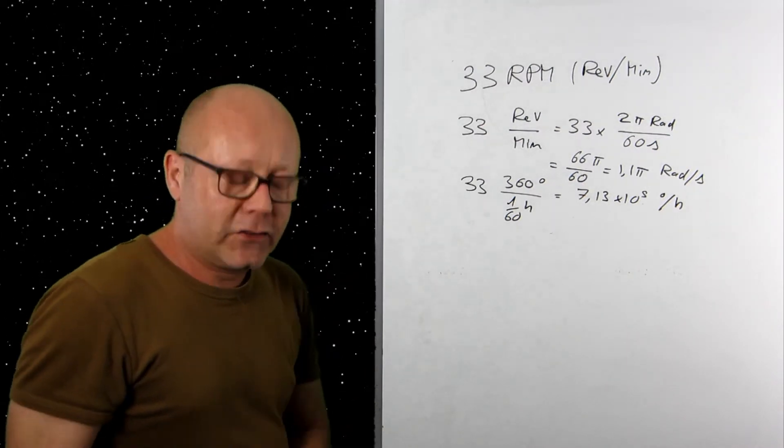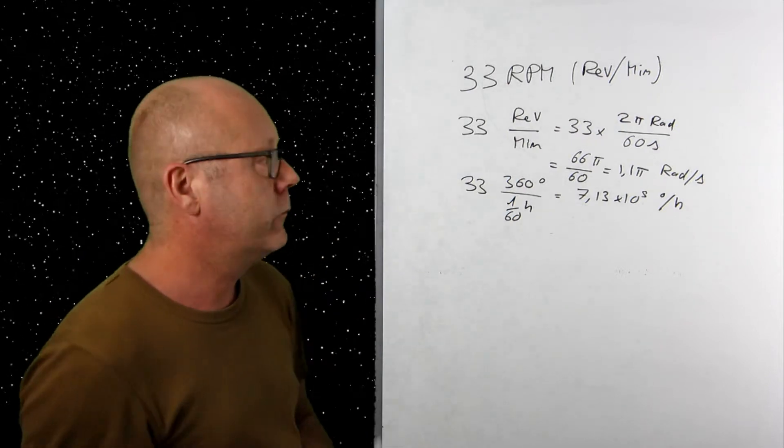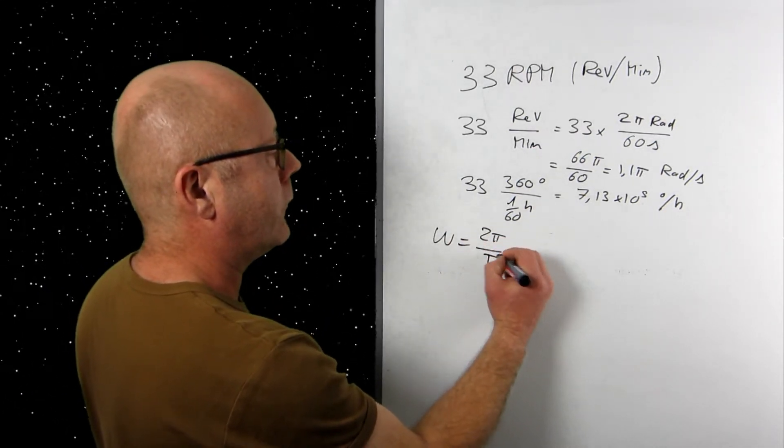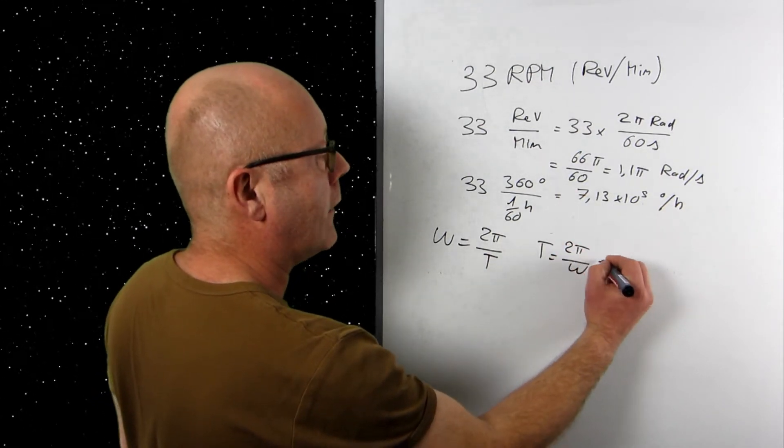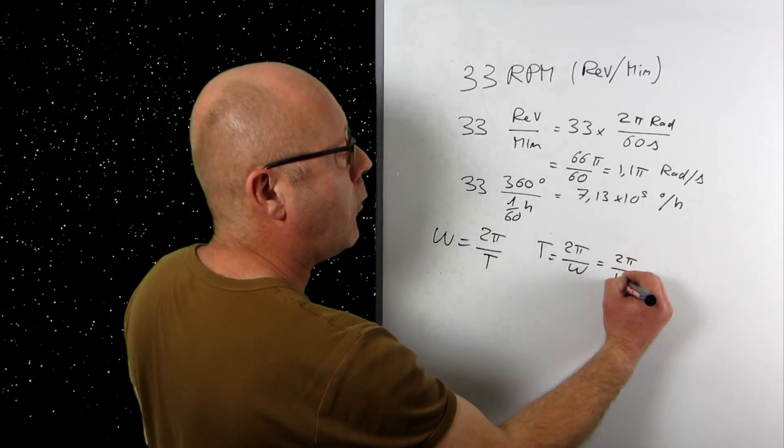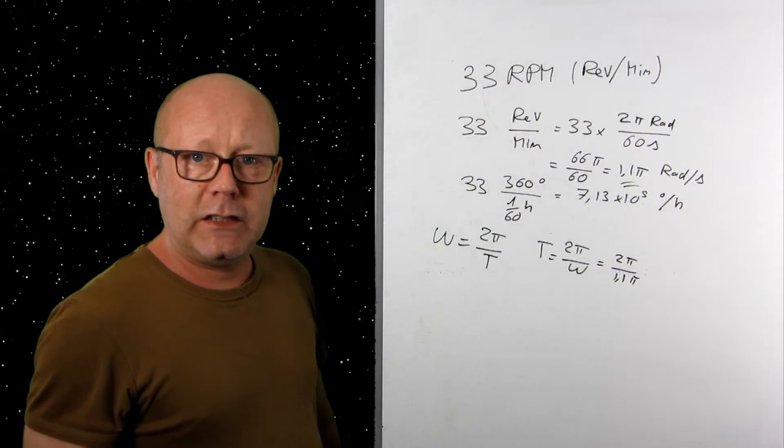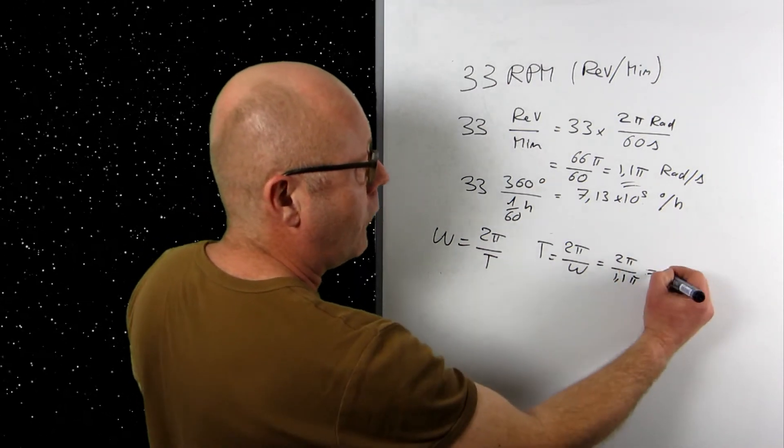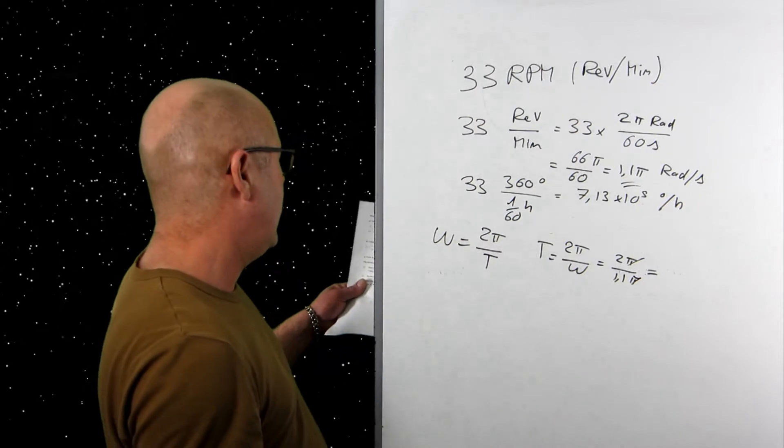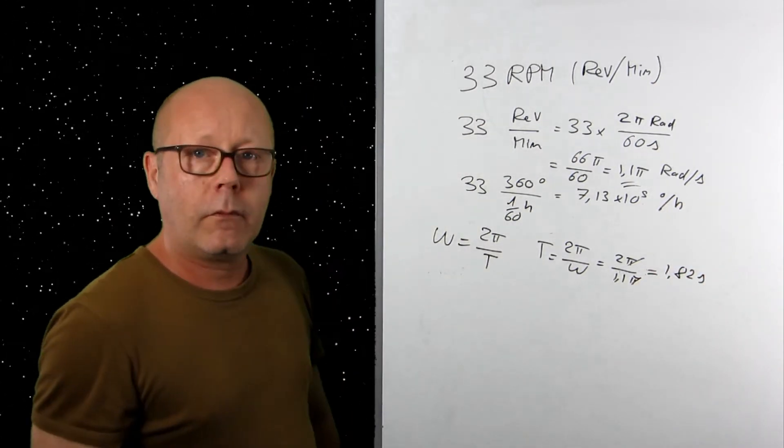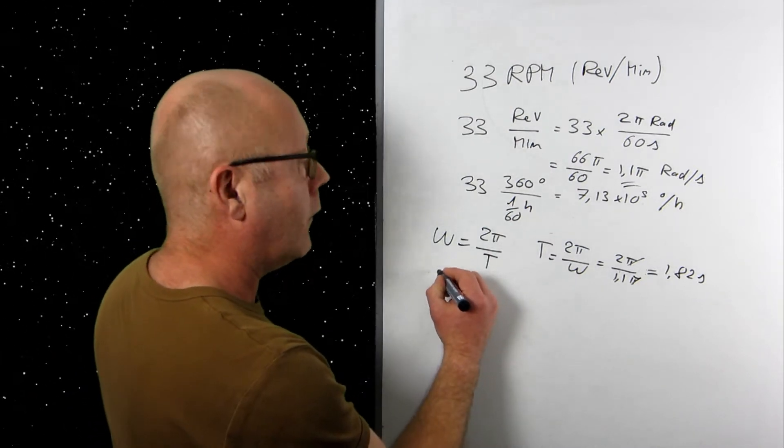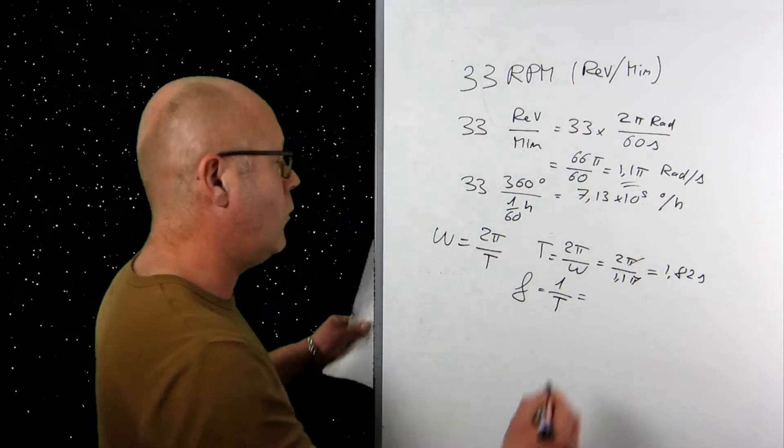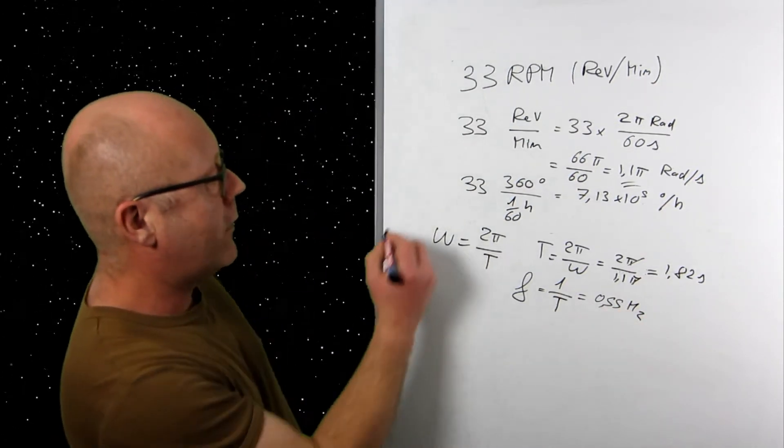The second question asks to calculate period and the frequency of this motion. We already have the angular velocity. Therefore, we can write ω equals 2π on T or T equals 2π on ω. And then plug in the numbers: 2π divided by 1.1π. That was the angular velocity. It needs to be in radians per second to keep consistent with the units. And you obtain, therefore, 2 divided by 1.1 is 1.82 seconds. Then for the frequency, it's just the inverse of T. So 1 on 1.82 will give you 0.55 Hz.